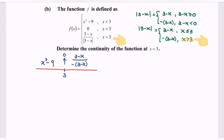Now we determine the continuity of the function f at x equals 3. Condition number 1: f(3). Referring to the number line, when x equals 3, the value of y is 0.